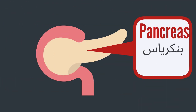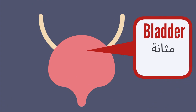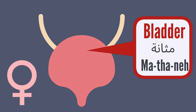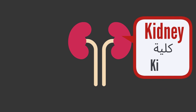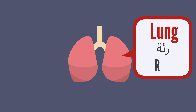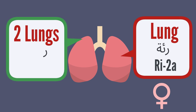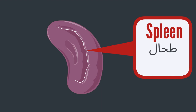Pancreas: pancrias. And the bladder: methane, methane — who's gotta go potty? Kidney: kilia, kilia. And kidneys: kilia, kilia. Lung: ria, ria. In two lungs: ria tain, ria tain. Spleen: paul, paul.